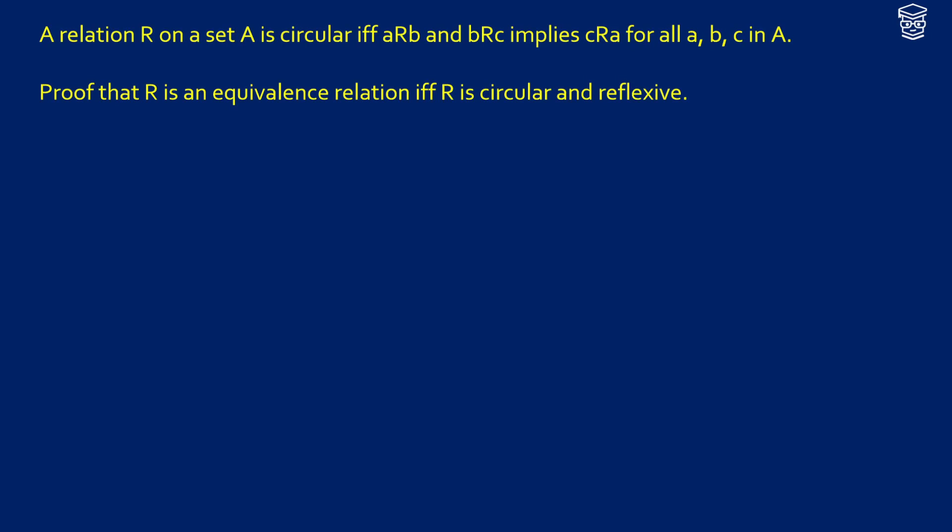A proof about relations, what is this? A relation R on a set A is circular if and only if aRb and bRc imply cRa. So what circular means here is imagine we have elements a, b, and c. Basically we're saying if we have a link from a to b and a link from b to c, we're going to get a link back from c to a.